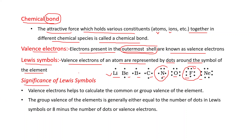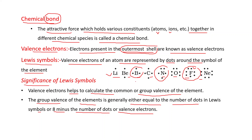Significance of Lewis symbols: valency electrons help to calculate the common or group valency of an element, and in Lewis symbols, dots represent the valency electrons. The group valency of the elements is generally either equal to the number of dots in the Lewis symbol, or eight minus the number of dots or valence electrons. For example, boron has three dots, so its valency is three. Carbon's valency is four. Nitrogen: eight minus five equals three. Oxygen: eight minus six equals two. Fluorine: eight minus seven equals one. In the same way we can find out the valency of other elements.